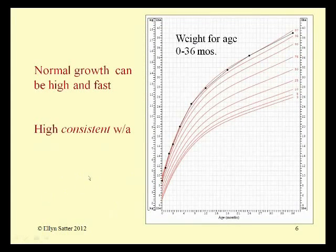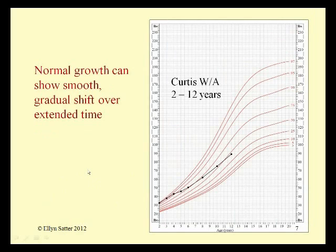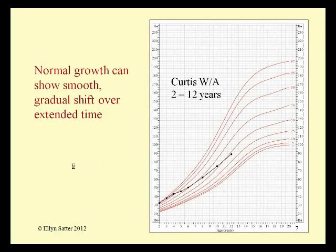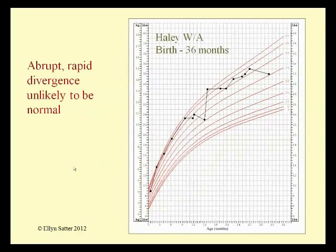Obviously, this is normal average growth. This is also normal growth, although this child is perking along at the third percentile — it's normal because it's consistent and smooth. Same here: high, fast, consistent, smooth. This child is growing at around the 97th percentile. Normal growth can show smooth gradual shift. It took Curtis 10 years to diverge downward from somewhere around the 95th–97th percentile to the 50th percentile. It's a very gradual shift over time.